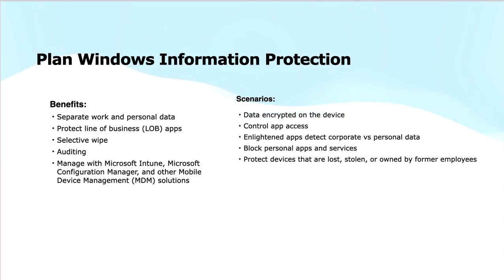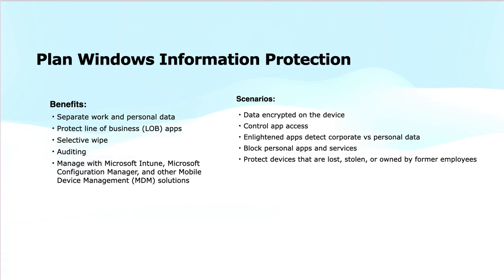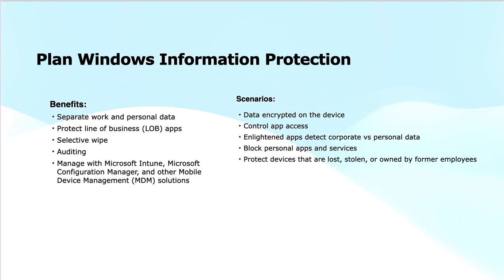WIP can be managed through Microsoft Intune, Microsoft Configuration Manager on-premises, or other mobile device management solutions, offering centralized control over data protection policies across devices. These benefits make WIP an effective solution for securing corporate data on employees' devices while maintaining user privacy. Use case scenarios include data encrypted on devices, controlling app access, detecting corporate versus personal data, blocking personal apps and services, and protecting devices that are lost, stolen, or owned by former employees.